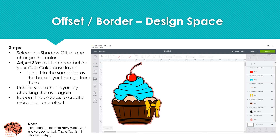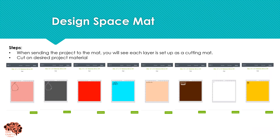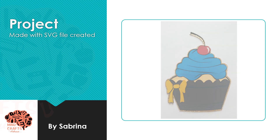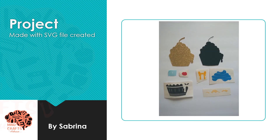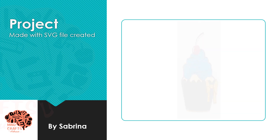A few things to note: you cannot control how wide your offset is going to be like you can in Inkscape. Because you aren't physically stretching the image — you're just using a bleed function — it's going to be what it is. Another thing to note is it isn't always very crisp; sometimes it just doesn't make a very clean path. That is the limitation when using Design Space. When you click Make It and send your project to the mat, each layer is going to have a corresponding mat in that color — follow the prompts on your screen and send to cut on your desired material. This is an example of a project made using the SVG file that was created. Each layer was cut on a different color; the outline and base were cut on cardstock and every other layer was cut in vinyl, then all applied on top of each other.